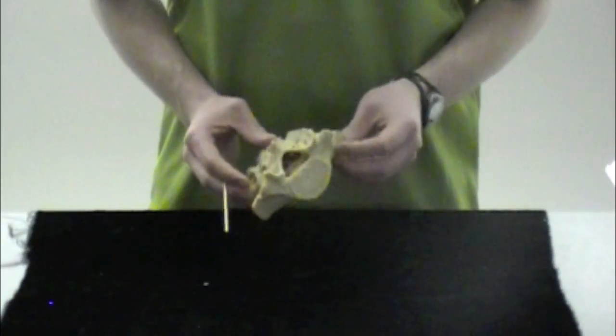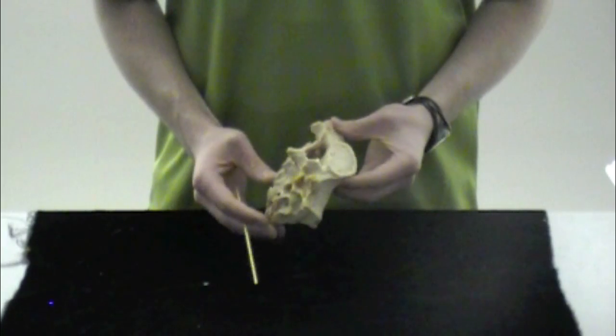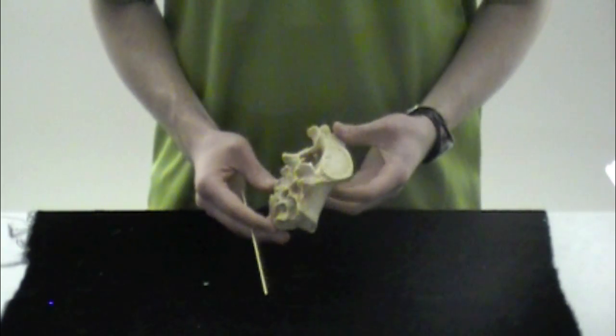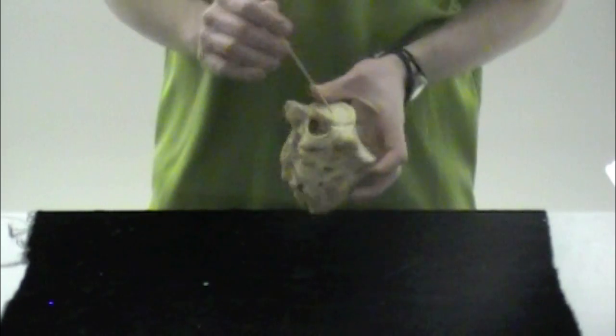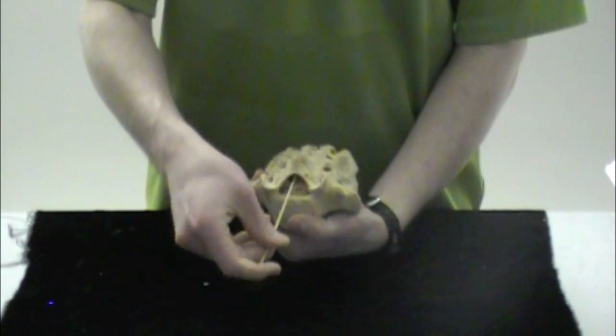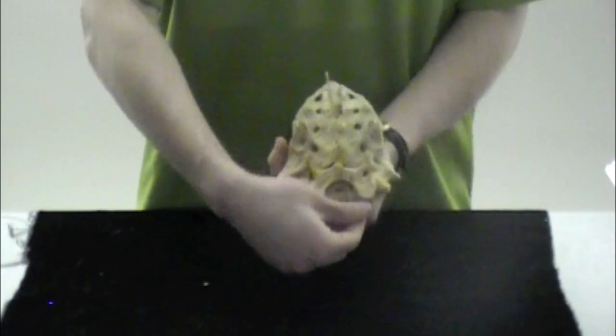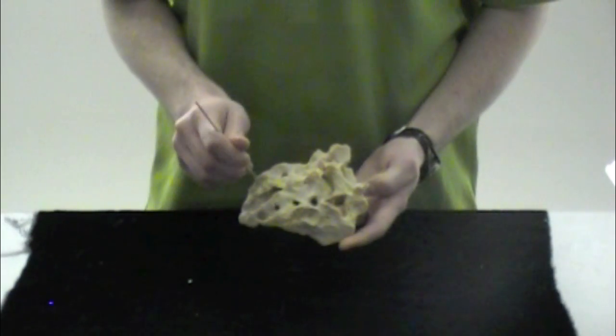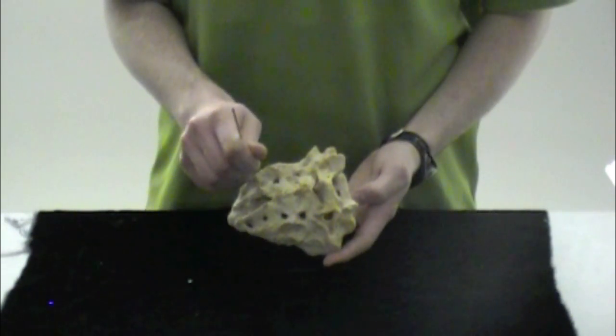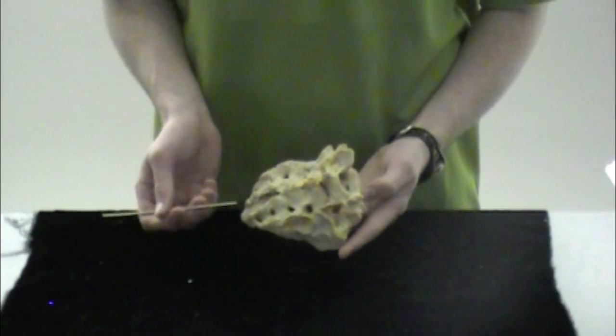Now we're going to go over your sacrum. This is those five fused vertebrae that sit at the very inferior part of the spine. A couple of structures. We have the sacral canal, which is right here. Goes all the way through there. Then we have your sacral hiatus. That refers to the exit of that sacral canal. So it's just right here. The exit of that sacral canal.